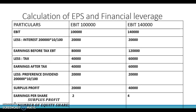When EBIT is Rs.1,00,000, we deduct interest, which is fixed: Rs.2,00,000 × 10% = Rs.20,000. Earnings before tax is Rs.80,000. Less tax at 50%: Rs.40,000. Earnings after tax is Rs.40,000. Less preference dividend, which is also fixed: Rs.2,00,000 × 10% = Rs.20,000. Surplus profit is Rs.20,000. Earnings per share = surplus profit ÷ number of equity shares = Rs.20,000 ÷ 10,000 = Rs.2.